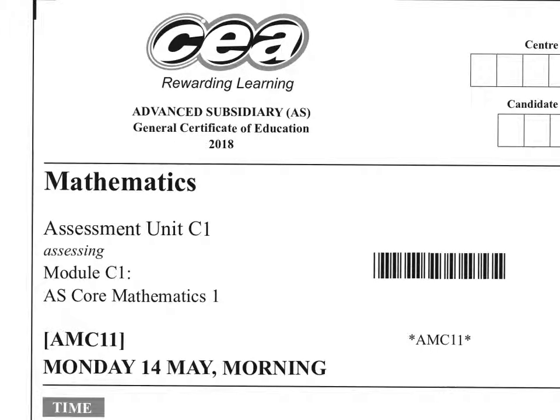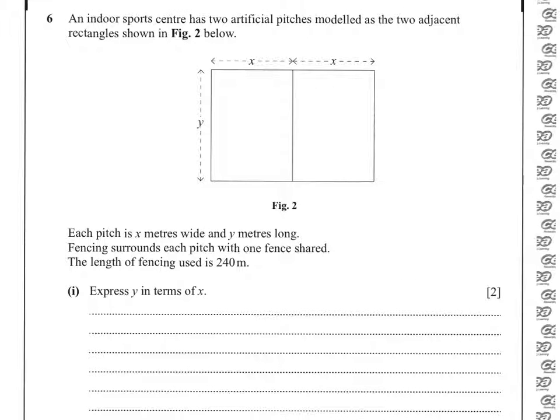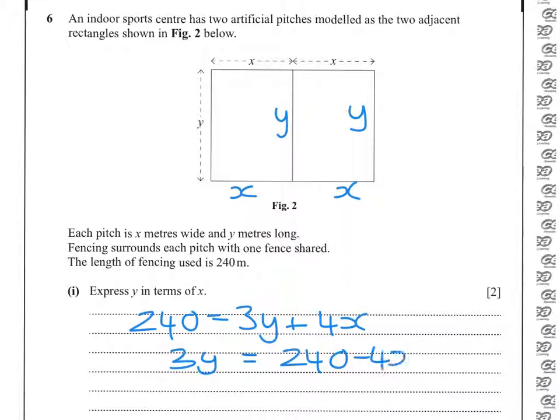C1 2018. So 240 equals the total length of fencing. If we add on all the corresponding lengths, we have that 240 has to equal 3y plus 4x. That means that 3y has to equal 240 minus 4x, and dividing through by 3, y would be 80 minus 4x over 3.